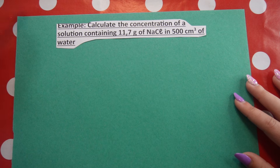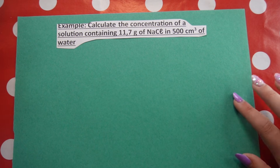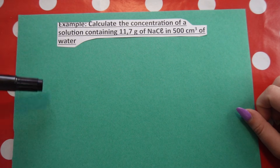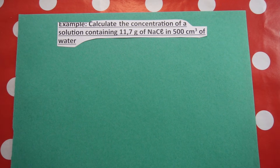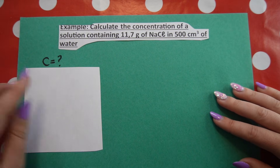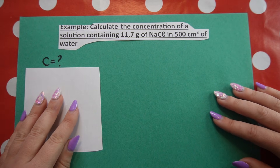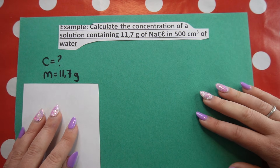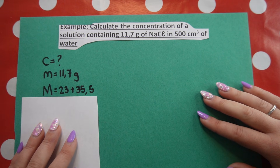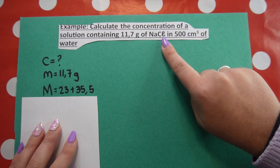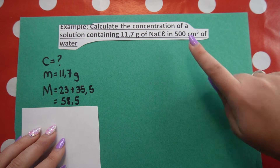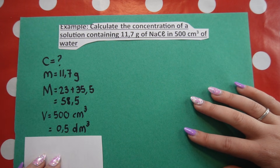The second example says: calculate the concentration of a solution containing 11.7 grams of sodium chloride in 500 cubic centimeters of water. The first thing I do is list my variables. I'm looking for concentration. They give me mass in grams, and the compound is sodium chloride — as soon as I know the compound, I can work out the molar mass: 23 for sodium plus 35.5 for chlorine gives a molar mass of 58.5 g·mol⁻¹. They also give me volume, which I convert to cubic decimeters.